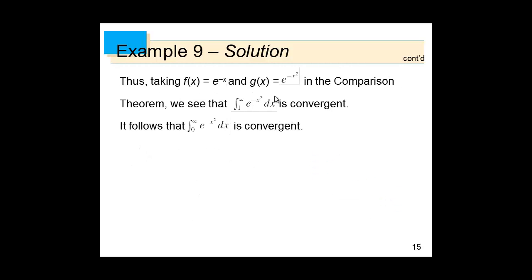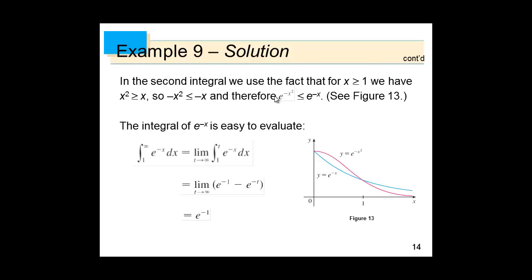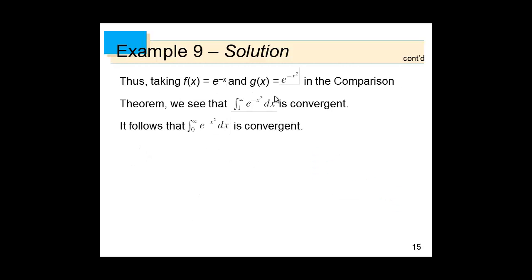Since e^(-x²) ≤ e^(-x) for x ≥ 1, and the integral from 1 to ∞ of e^(-x) dx converges, by the Comparison Test the integral from 1 to ∞ of e^(-x²) dx also converges. Therefore the integral from 0 to ∞ of e^(-x²) dx is convergent as well.